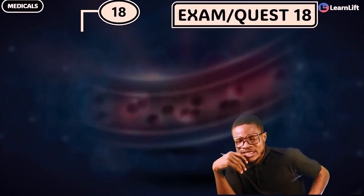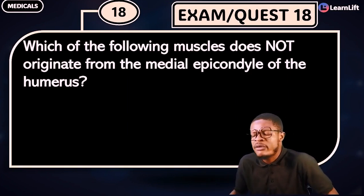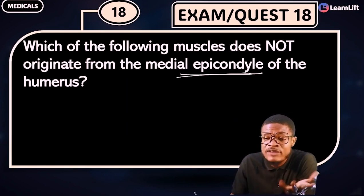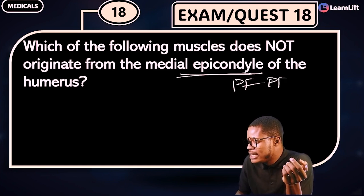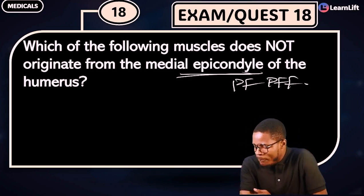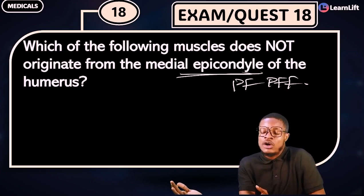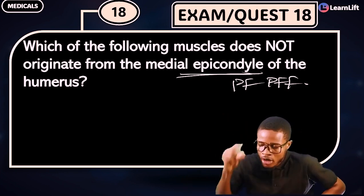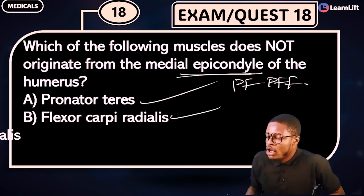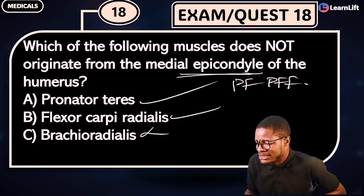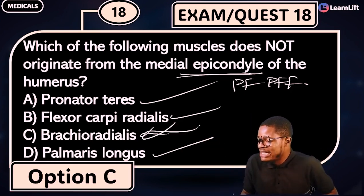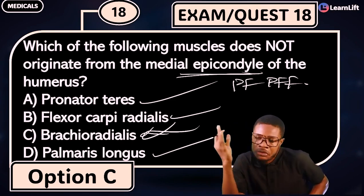Question 18: Which of the following muscles does NOT originate from the medial epicondyle of the humerus? If you don't come from the medial epicondyle, you are not part of the PF-PFF family. Option A: Pronator Teres — part of them. Option B: Flexor Carpi Radialis — part of them. Option C: Brachioradialis — never a part. Option D: Palmaris Longus — part. The correct answer is Option C, Brachioradialis.